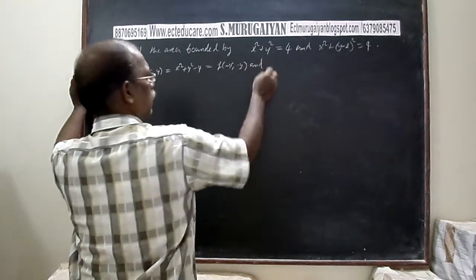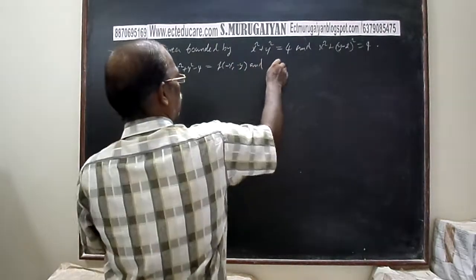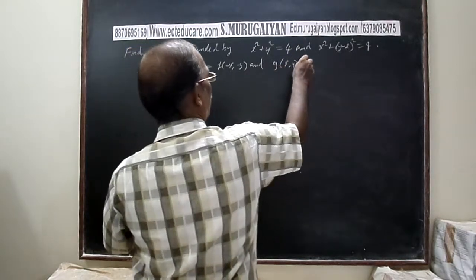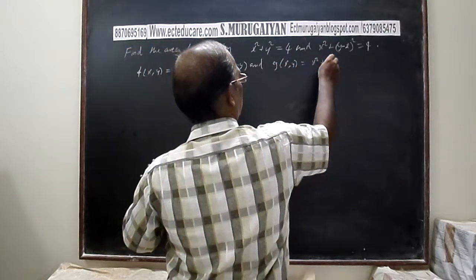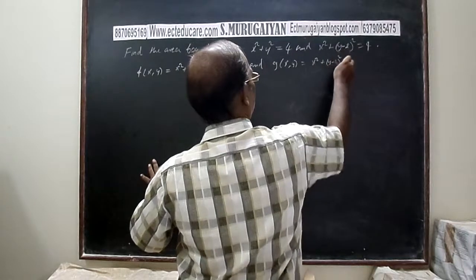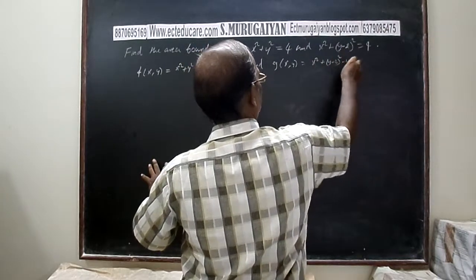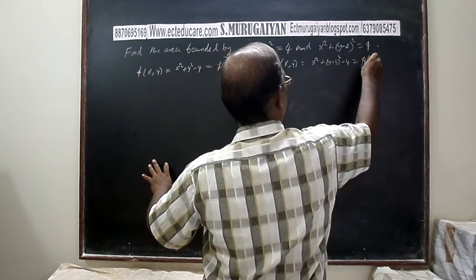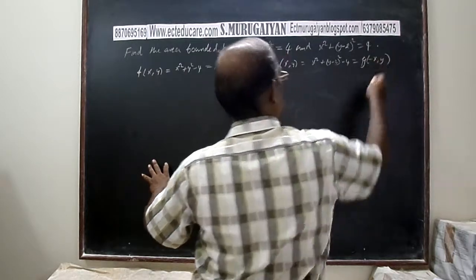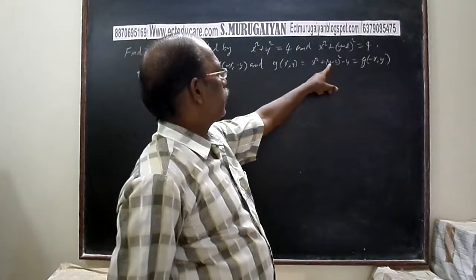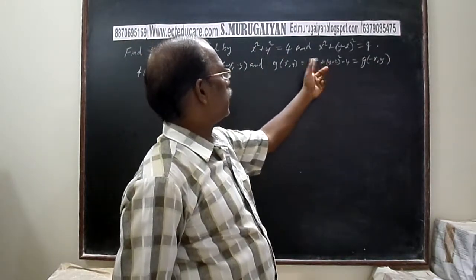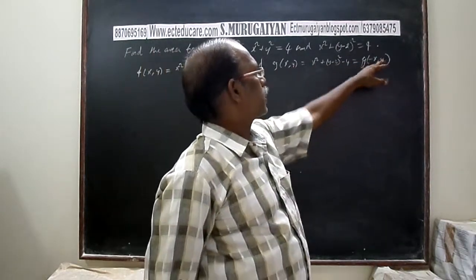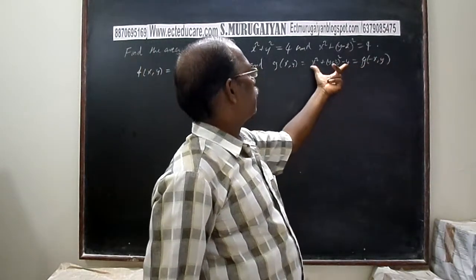For the second circle, let g(x, y) = x² + (y - 2)² - 4. If we change y by -y, we won't get the same value. But g(x, y) and g(-x, y) are both equal.